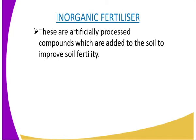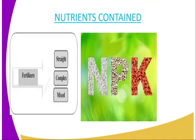Then we have inorganic fertilizers. These are artificially processed compounds which are added to the soil with the purpose of improving the soil fertility. We can classify inorganic fertilizers based on different categories. The first category is based on nutrients contained in the fertilizer. For example, we have straight fertilizers and also compound or mixed fertilizers.